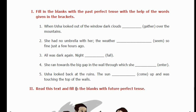Usha looked back at the ruins — past tense. The sun had come up and was touching the top of the walls. So these are Past Perfect Tense examples. In Past Perfect Tense, when two past events are described, the event that happened first — before the other past action — uses Past Perfect Tense. For that earlier action, we use 'had' plus the past participle form of the verb.